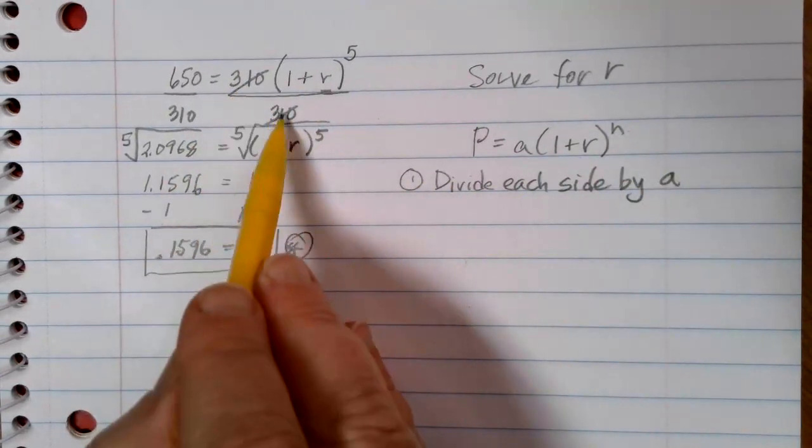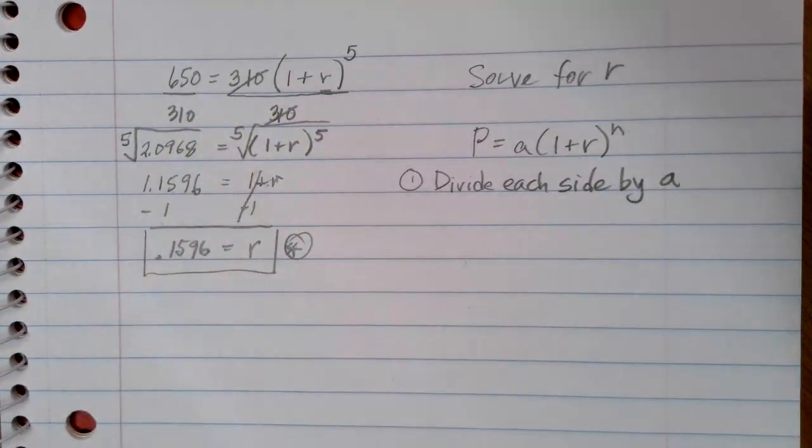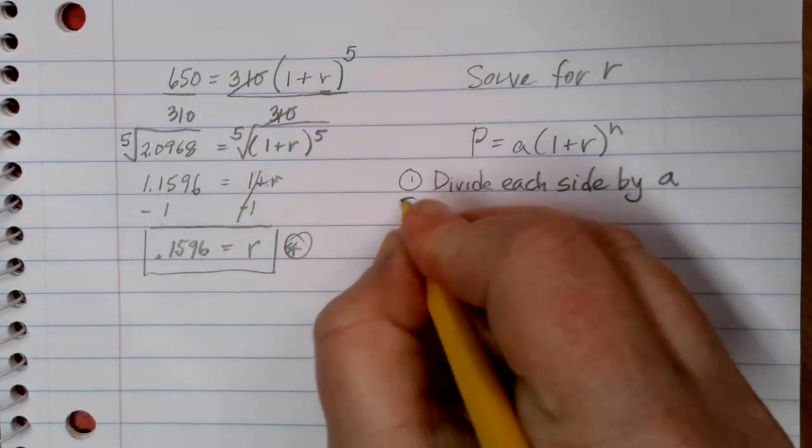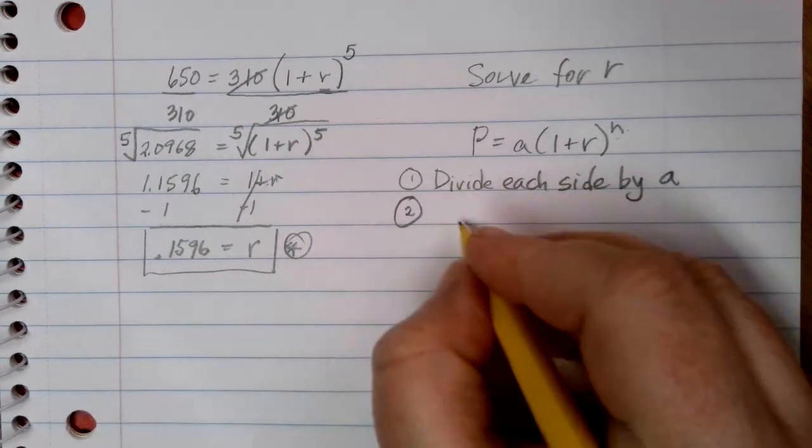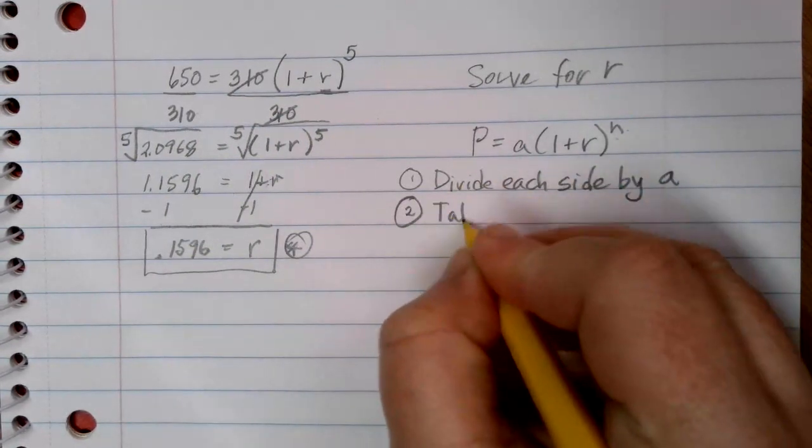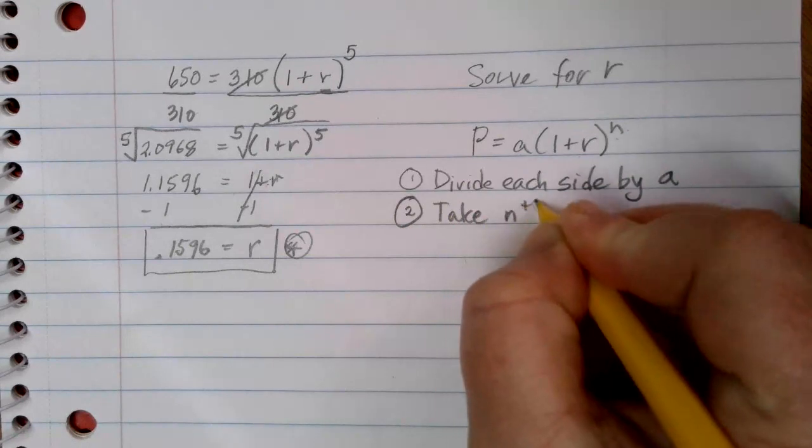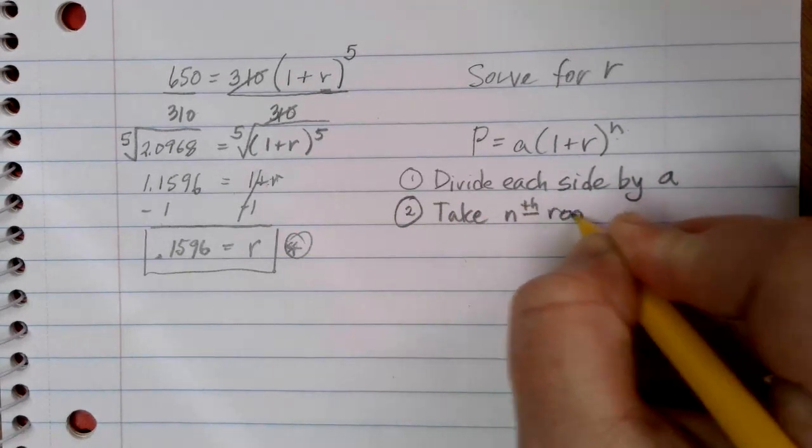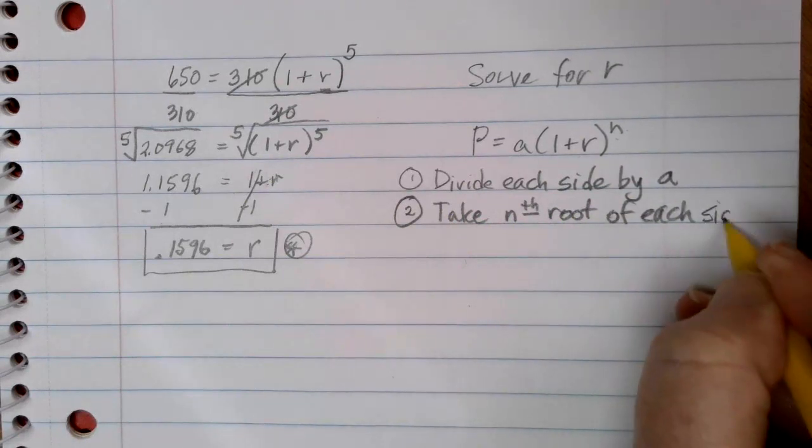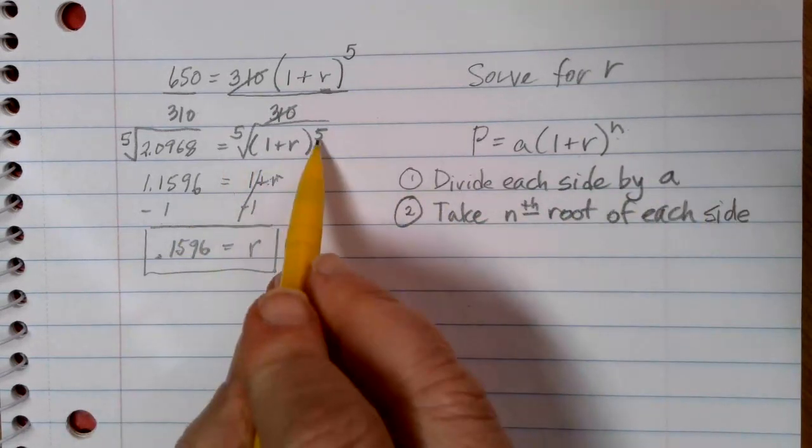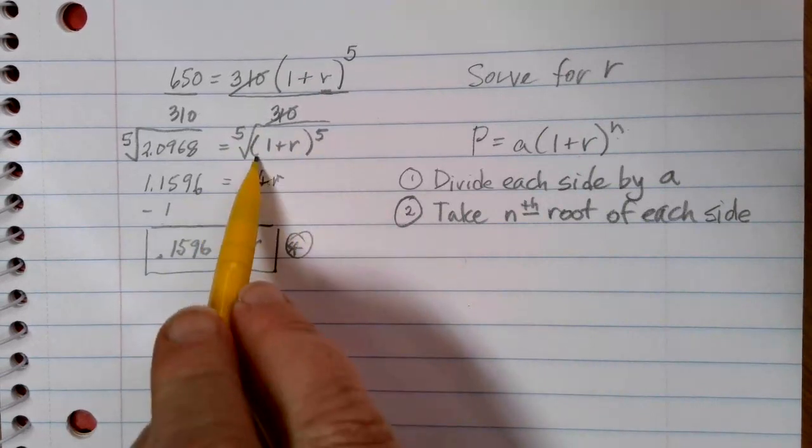Just like what we did here. The 310 was the A. We divided by 310 on each side. The second thing we need to do is to get rid of the exponent. And we're going to do that by taking the Nth root of each side. So here our power was 5, so we take the 5th root.